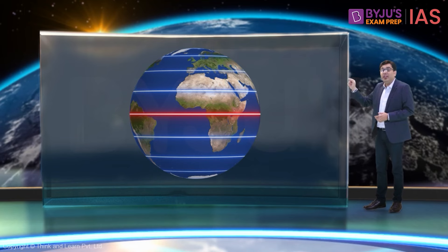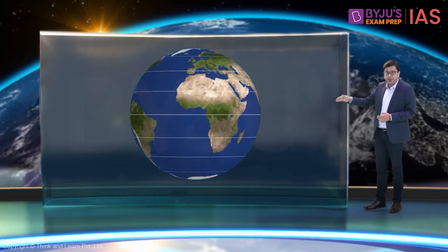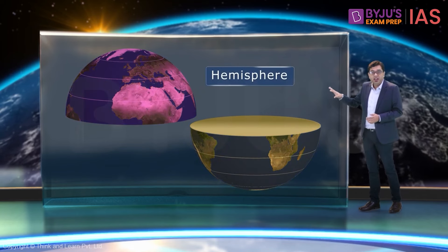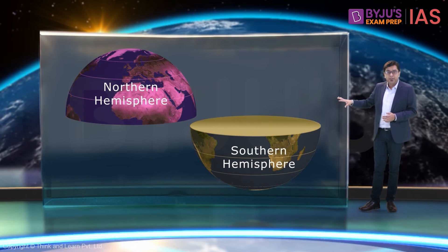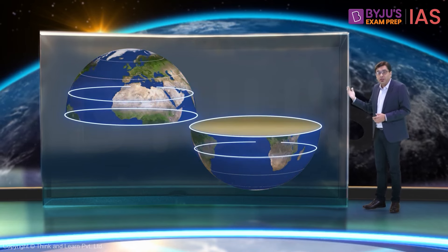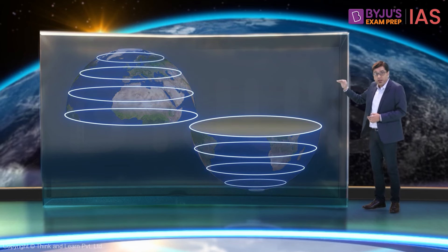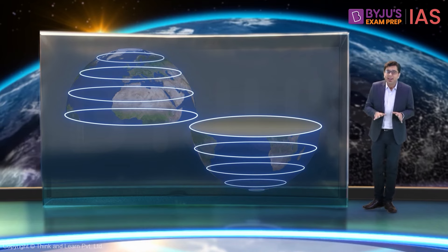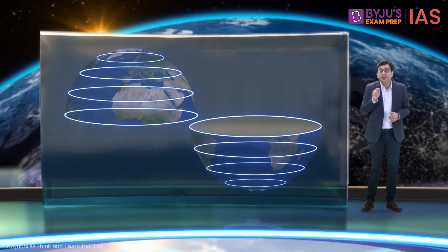This latitude is called the equator. It divides the Earth into two equal halves. Each half is called a hemisphere, named the northern hemisphere and the southern hemisphere. As you can see, the circumference of these latitudes goes on decreasing as we move from the equator towards the poles. Thus, latitudes are not of the same length — their lengths vary.